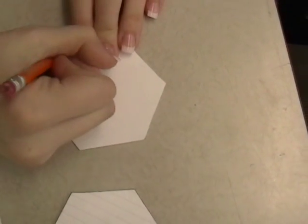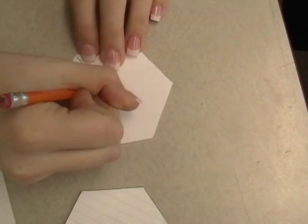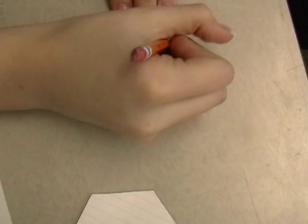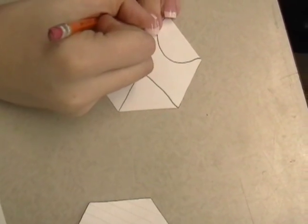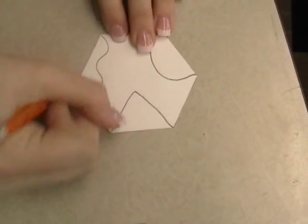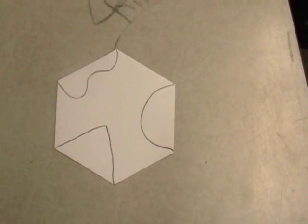Once you have that cut out, you draw a design on three of the six sides. And then cut them out.